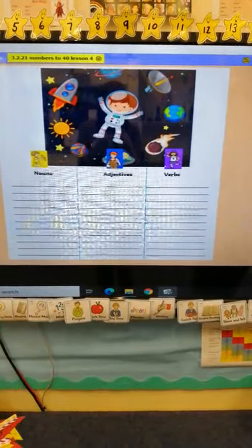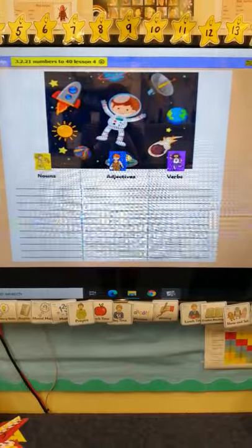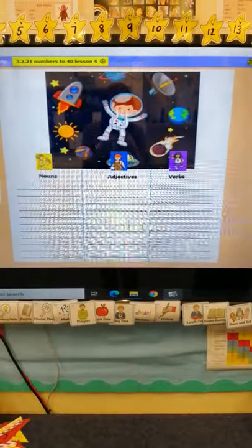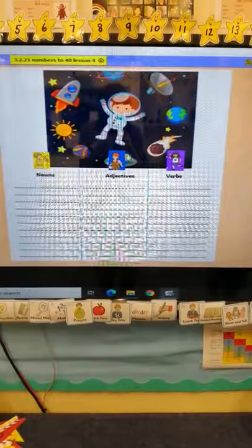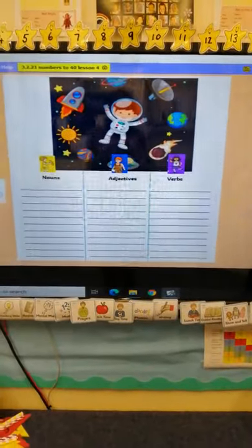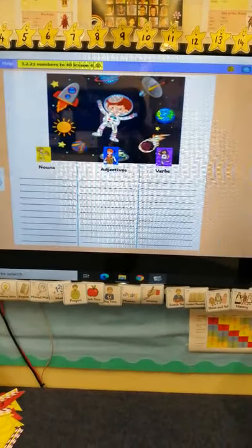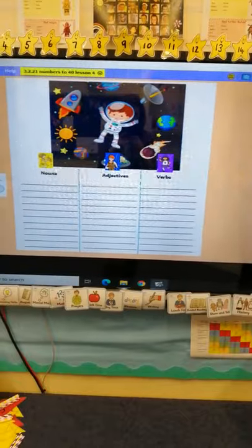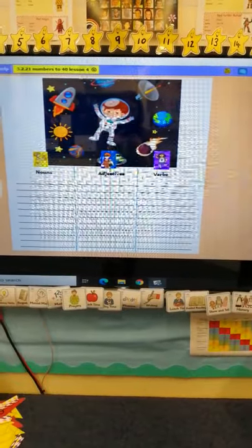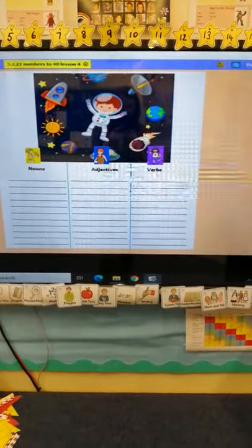Let's remind ourselves, what is a noun? Yep, you're right. It is something we can take a picture of, a thing we can take a picture of. What's an adjective? Great, well done. I can hear you all shouting. An adjective is something that describes a noun.